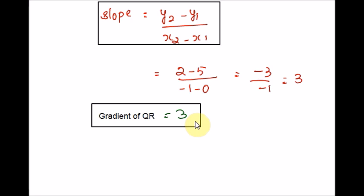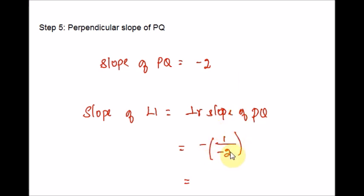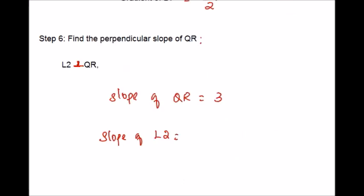Now let us use the concept here. Line L1 is perpendicular to chord PQ, and L2 is perpendicular to chord QR. To find the slope of a perpendicular line, it is nothing but the negative inverse. The gradient of L1: we got the slope of PQ in step 3 as negative 2, so we take the negative inverse. Same way, we find the perpendicular slope of QR, which is the slope of L2, because L2 is perpendicular to QR — just take the negative inverse.